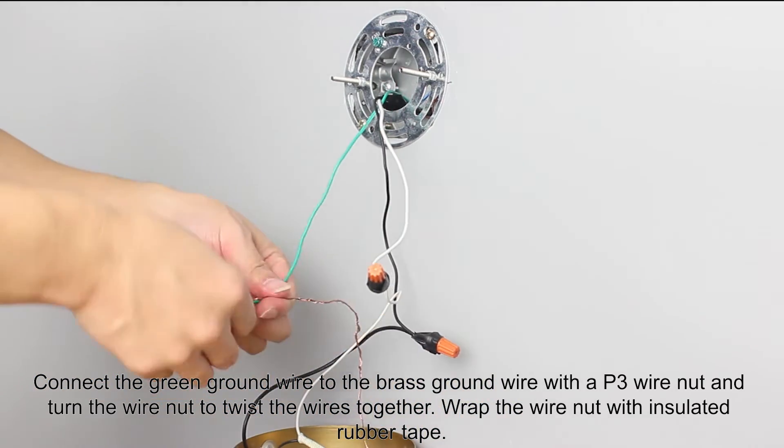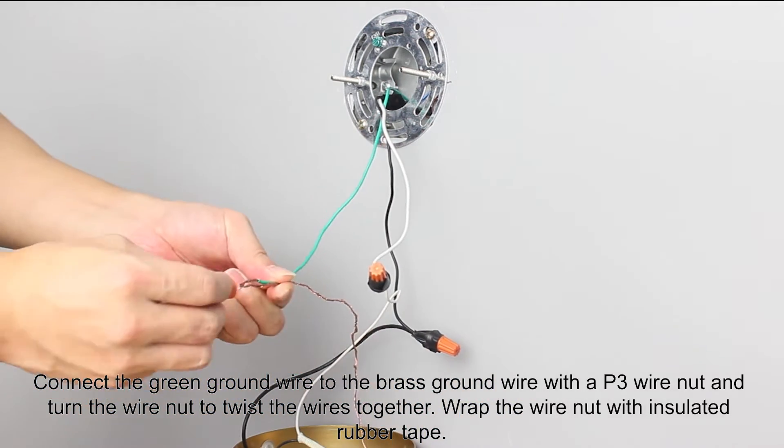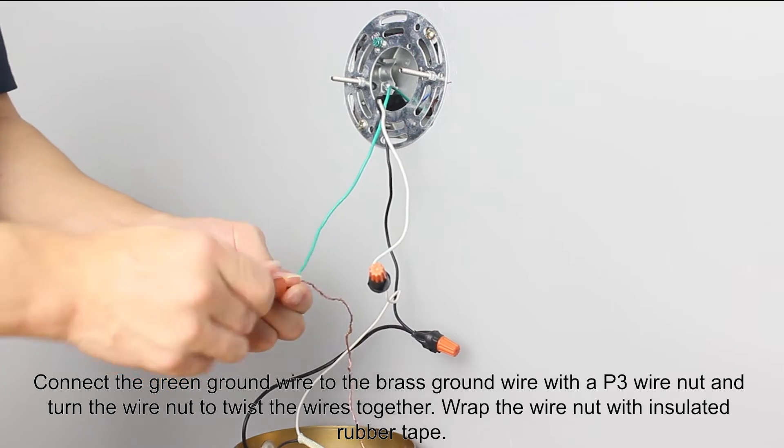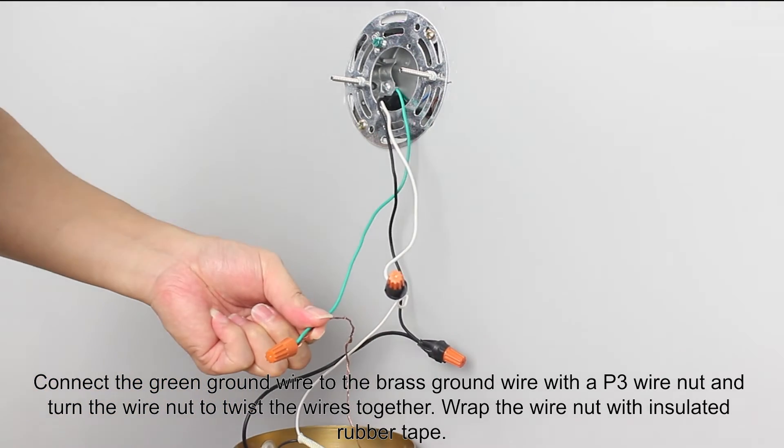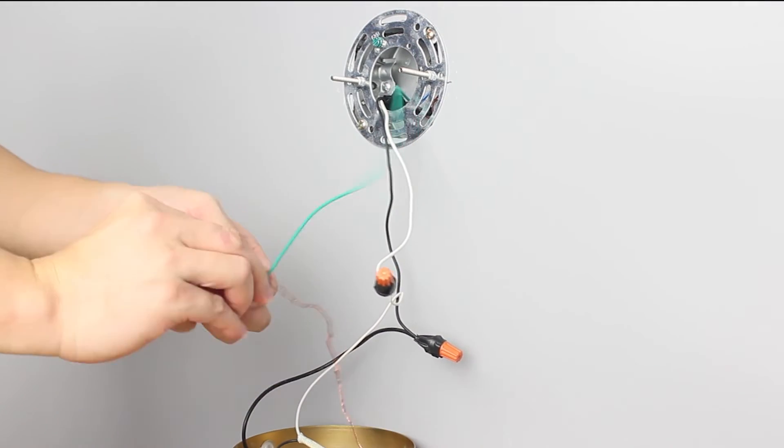Connect the green ground wire to the brass ground wire with a P3 wire nut and turn the wire nut to twist the wires together. Wrap the wire nut with insulated rubber tape.